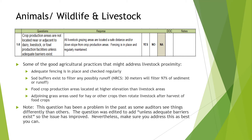Nevertheless, make sure you address this as best you can. Since adequate barriers exist, you can circle yes, then provide your good agricultural practices used as preventative measures in your response box. Responses may vary. When in doubt, contact your local extension agent or Morris for support. If your response notes you have provided adequate barriers because there is a risk, you can reference your field map in the notes section.